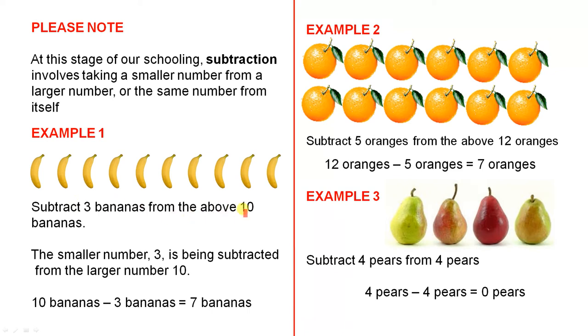Please note. At this stage of our schooling, subtraction involves taking a smaller number from a larger number or the same number from itself. Example 1: Consider the following apples. Subtract three bananas from the above ten bananas. The smaller number, three, is being subtracted from the larger number, ten. Ten bananas minus three bananas equals seven bananas. So let's take away the three: one, two, three. They're all gone. They no longer exist. How many do we have left? One, two, three, four, five, six, seven. So we had a larger number of bananas, which was ten, and we took away a small number, which was three, and we have seven left.